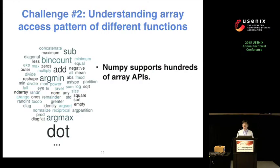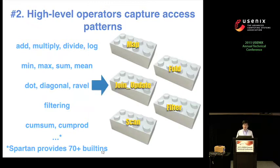The second challenge is that Spartan needs to understand the array access pattern of each expression. However, there could be many functions and APIs — NumPy supports hundreds. To capture array access patterns, we propose a set of high-level operators. All array programs and functions are implemented using these high-level operators, so Spartan only needs to understand the array access pattern of these operators. Unlike traditional dataflow primitives, keys and values of these operators are restricted to array information, so each operator exposes a fixed array access pattern.